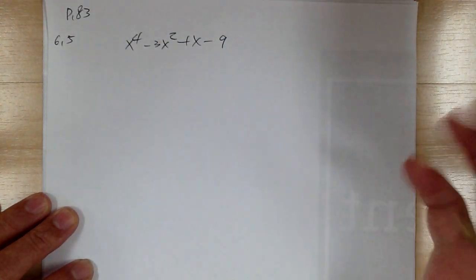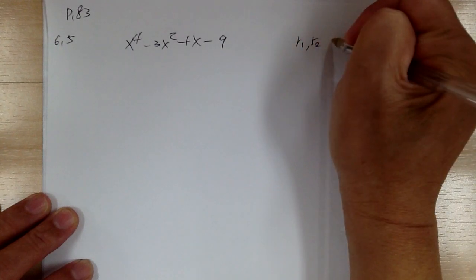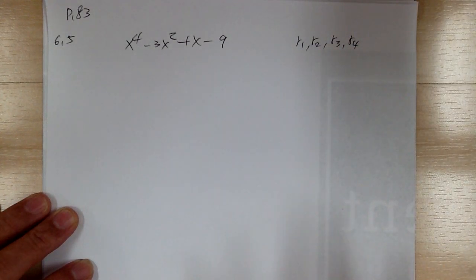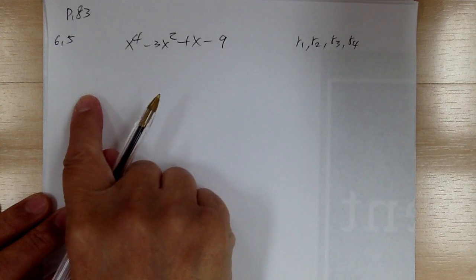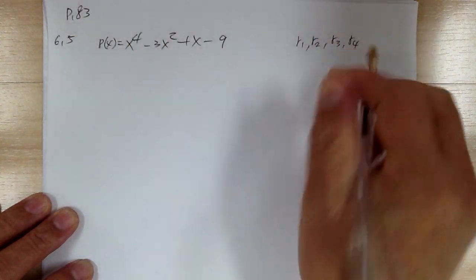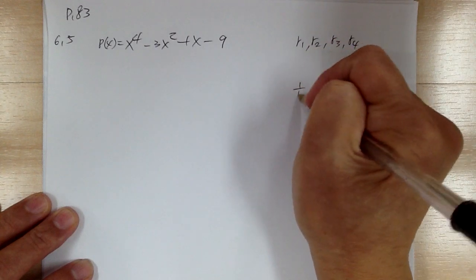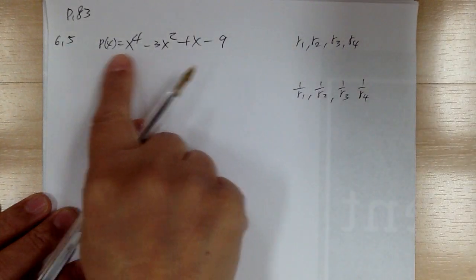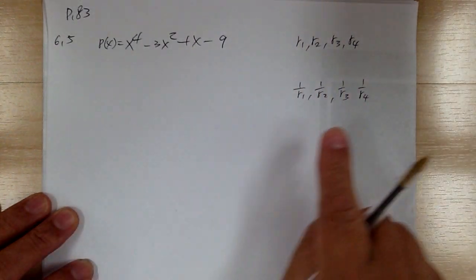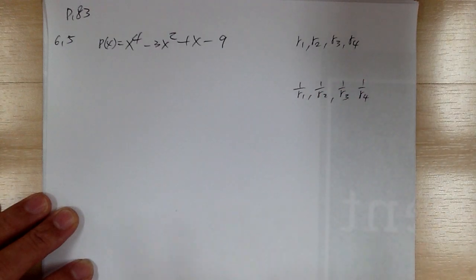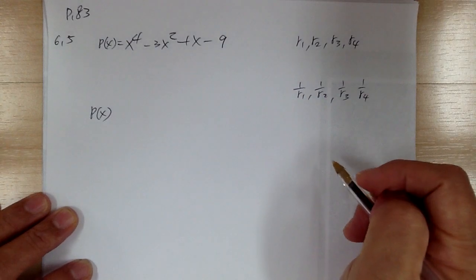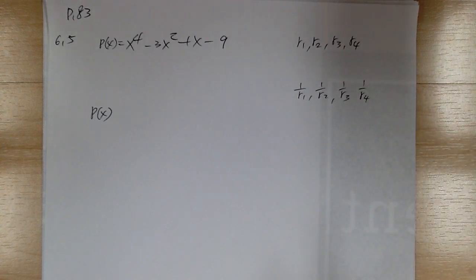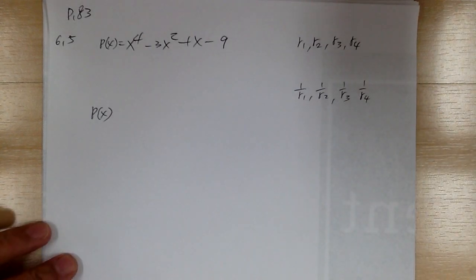Now you're looking for a polynomial whose roots are the reciprocals of these — so you want a polynomial with roots 1/r1, 1/r2, 1/r3, 1/r4. For reciprocal roots, it's fairly simple: all you have to do is reverse the coefficients. But you have to be careful.